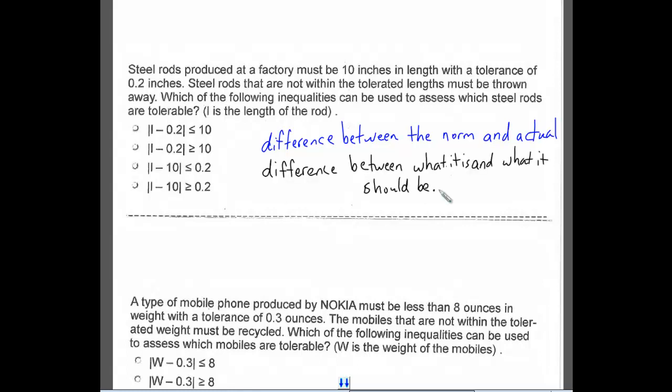Let's look up in the problem and find some numbers. We see that steel rods produced at a factory must be 10 inches in length. So that's the actual, with a tolerance of 0.2 inches. That means that it must be less than or equal to 0.2.